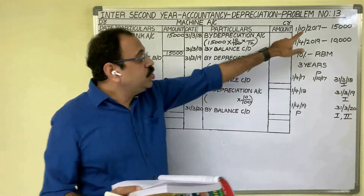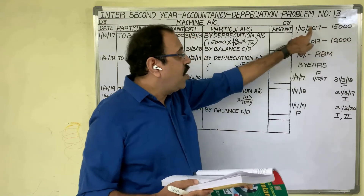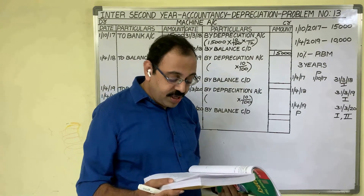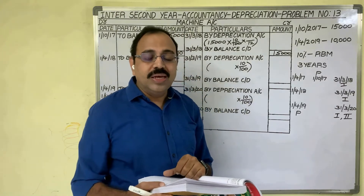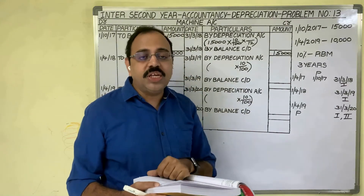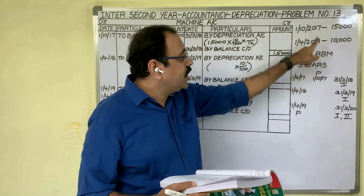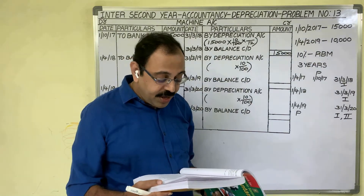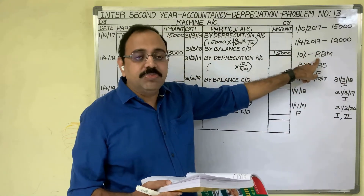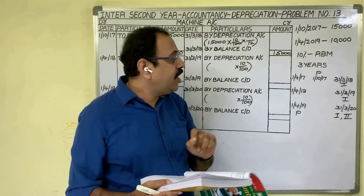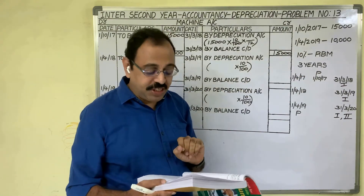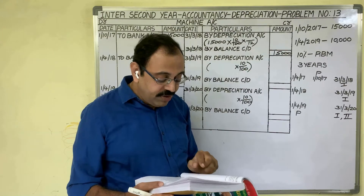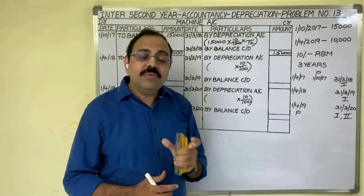Let us see the question first. On 1st October 2017, Raju Traders bought a machine for 15,000 rupees. Additions made to the machine on 1st April 2019 were 10,000 rupees. Depreciation is charged at 10 percent under the reducing balance method — also called the diminishing balance method or written-down value method — at 10 percent per annum. We need to prepare the machinery account for three years, assuming accounts are closed on 31st March every year.